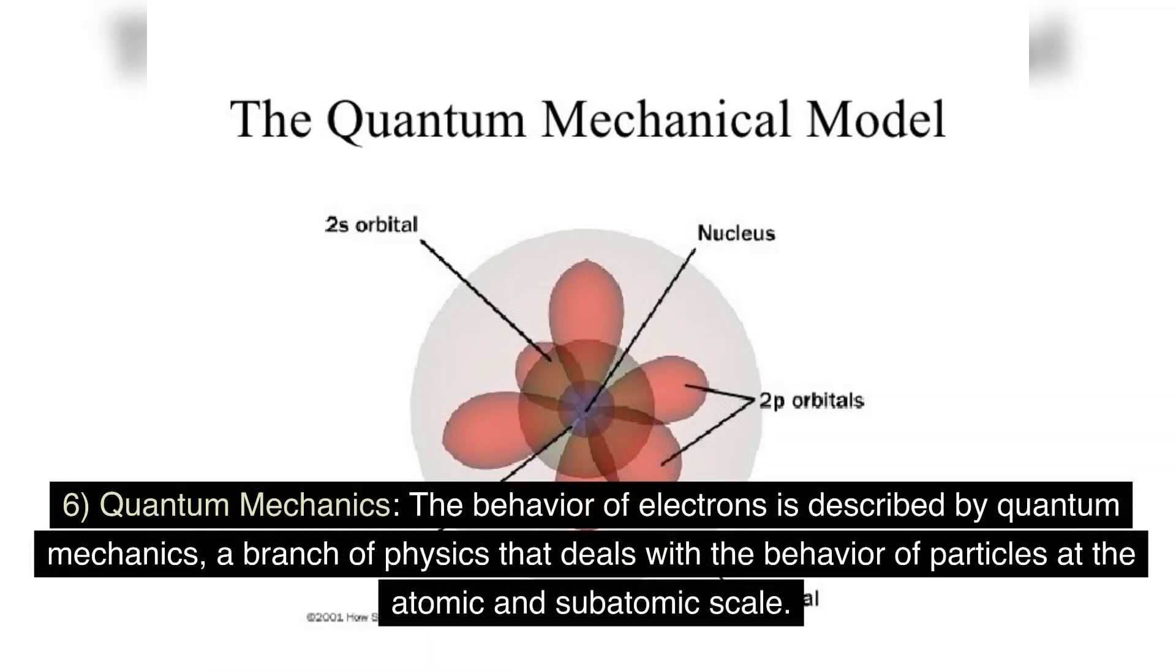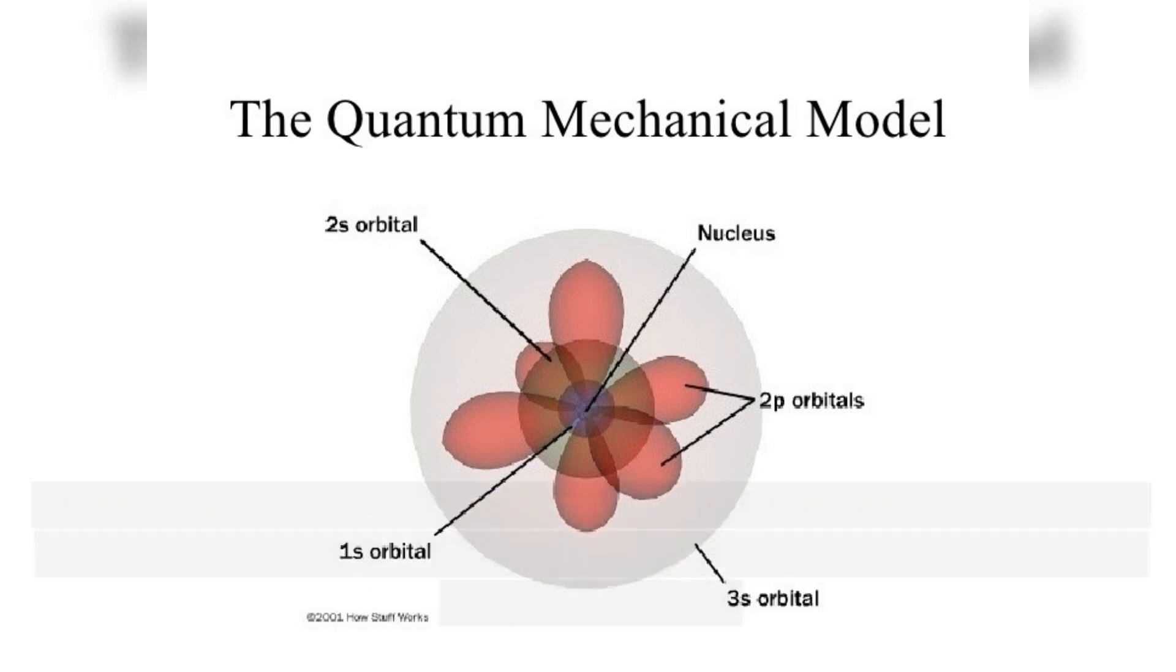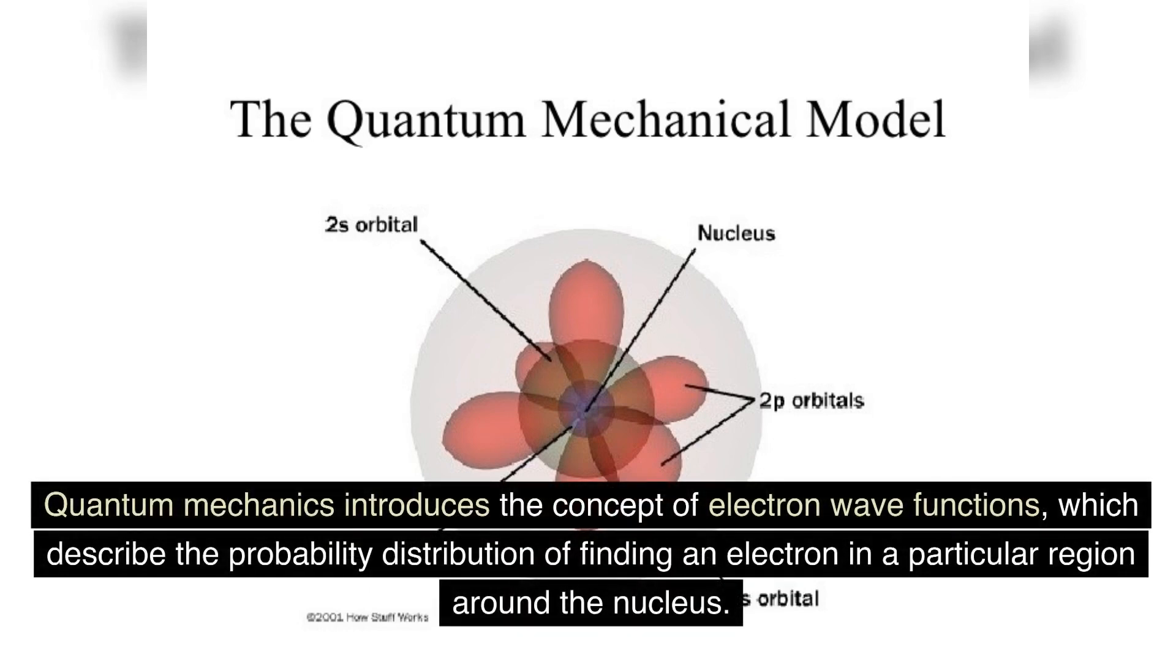Quantum mechanics: the behavior of electrons is described by quantum mechanics, a branch of physics that deals with the behavior of particles at the atomic and subatomic scale. Quantum mechanics introduces the concept of electron wave functions, which describe the probability distribution of finding an electron in a particular region around the nucleus.